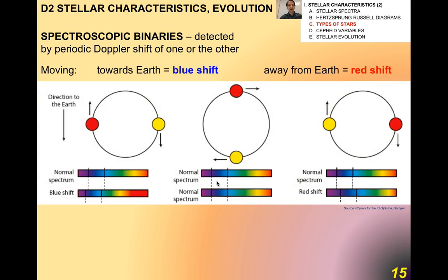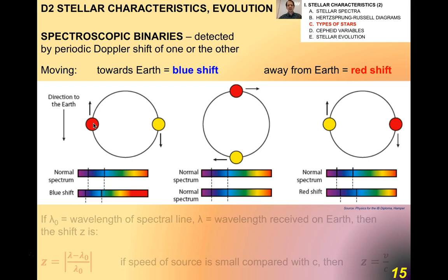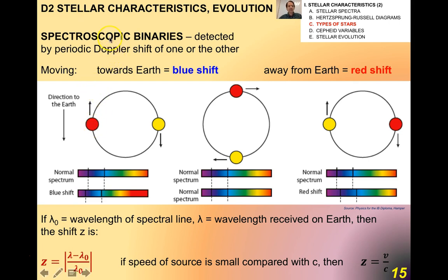And then spectroscopic binaries. These are binary star systems that are detected by periodic Doppler shift of one or the other. It's so cool. If we have a star that's moving towards the Earth or away from the Earth, we can detect from the atomic spectra what's happening, and it turns out that there's a periodic shift of those spectral lines to the left and right, and we can deduce what's happening with these binary star systems. It's quite remarkable that humans have figured out how to do that.